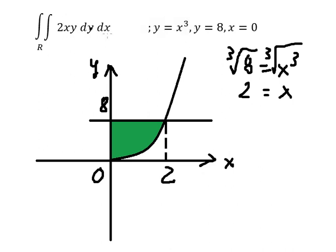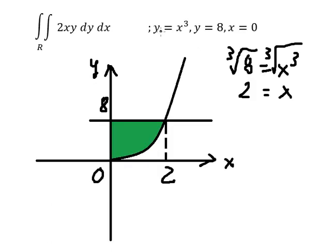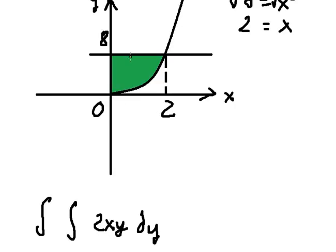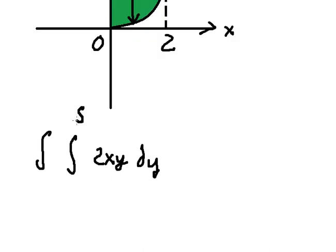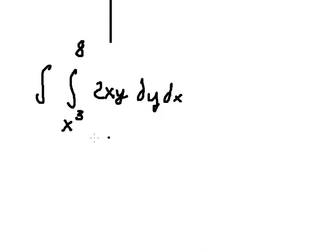We put this inside the box. For dy, this goes in here. We have number 8 on the top and the bottom is x to the power of 3. The x bounds are from 0 to number 2.